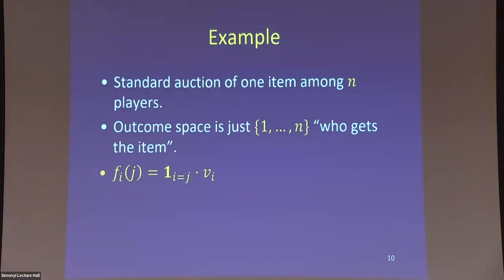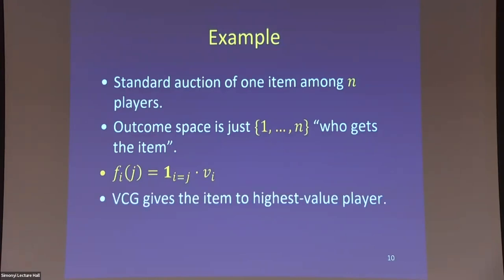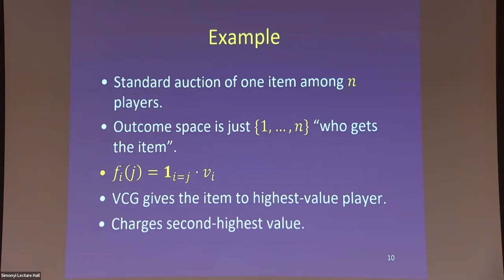The utility of player i for outcome j is zero if they don't get the item and v_i if they do. To maximize happiness, you give the item to the person who wants it most. You charge zero from everyone else because they don't change the outcome. The player who won is charged the second-highest value — that's how happy the world would be if you gave the item to the second-highest bidder. So you recover the second-price auction, which is truthful.